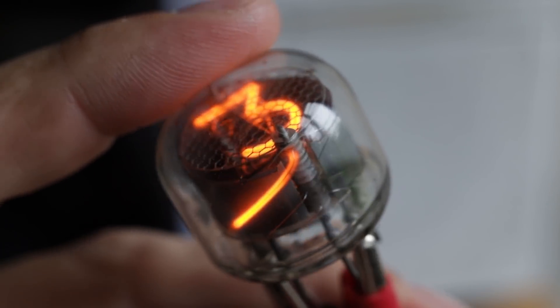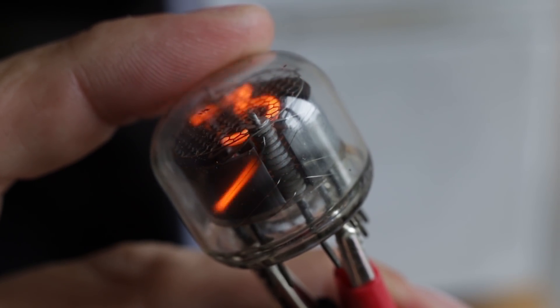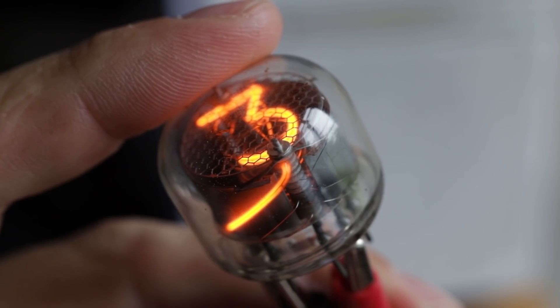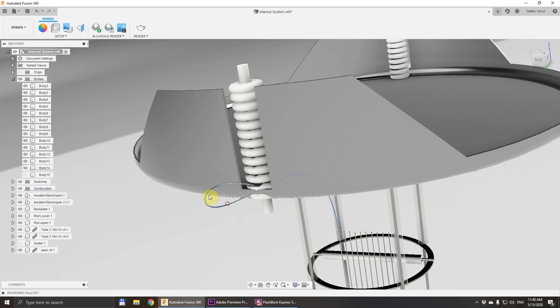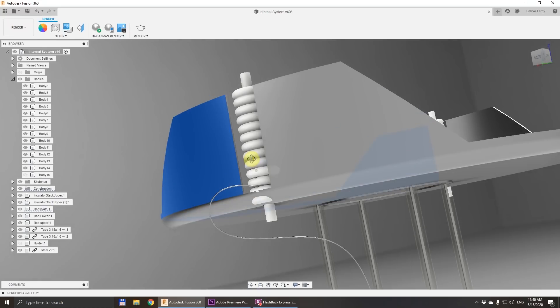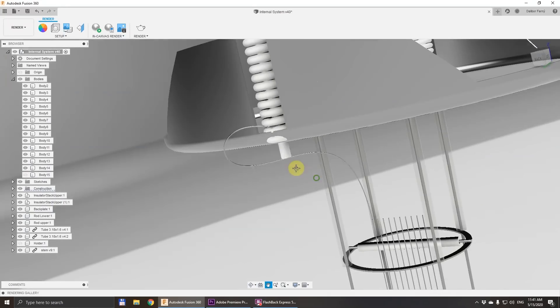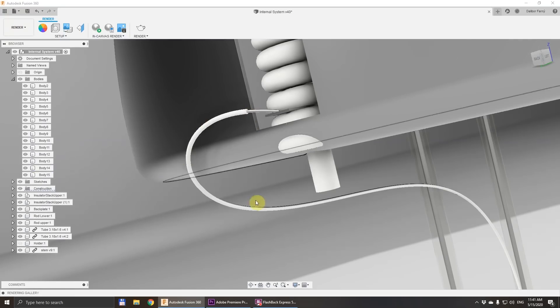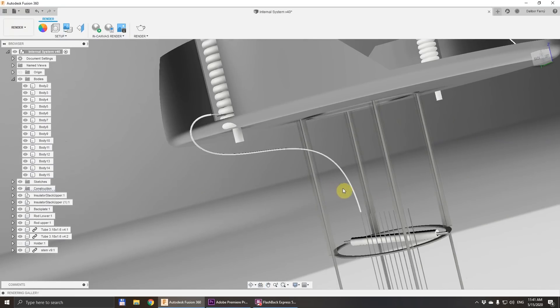But the problem is that if we leave it like this, the wire will glow as well because there is also potential between this wire which is negative and this anode plate which is positive. To prevent this glow, we need to make some kind of insulation on this wire so that this insulation prevents the wire from glowing.